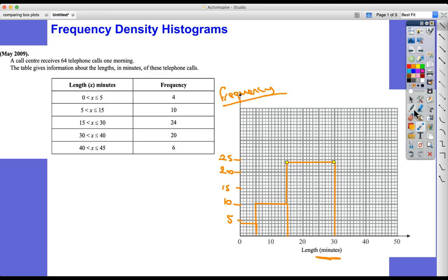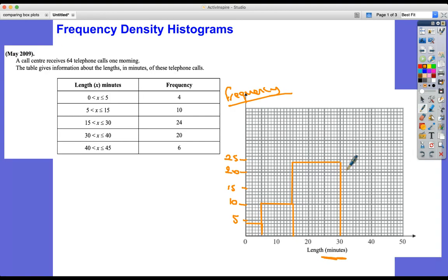This is a very misleading representation or display of data. Because let's bear in mind that this one here is representing a frequency of 4, this one's representing a frequency of 10, and this one's representing a frequency of 24.